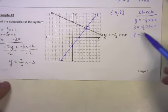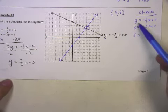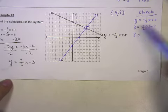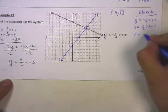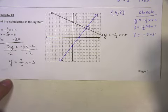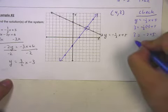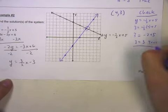Okay, so let me back up. So I'm checking 4, comma, 3 in the first equation. So I replaced y with 3, replace x with 4. And let's see if we get a true statement. Negative one-half times 4 is negative 2 plus 5. Negative 2 plus 5 is 3. That's true.